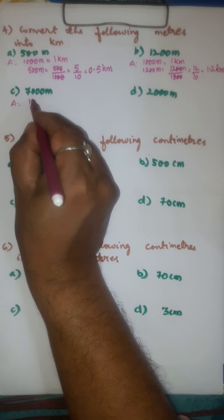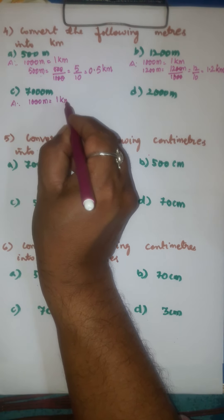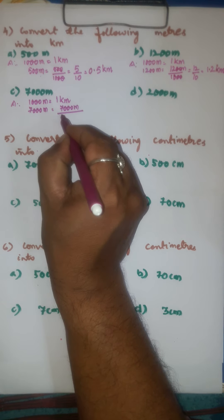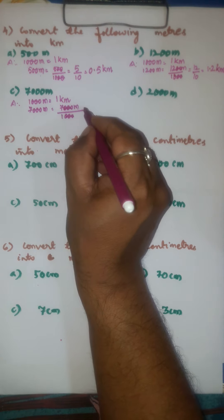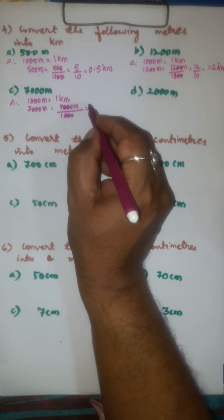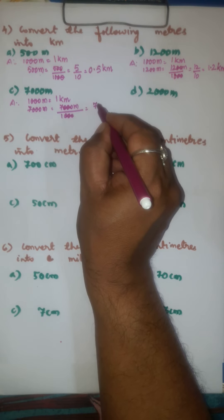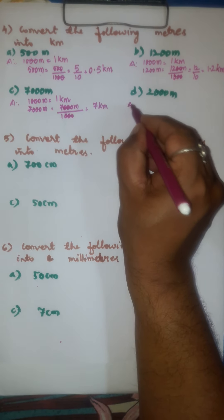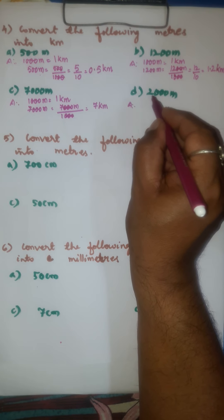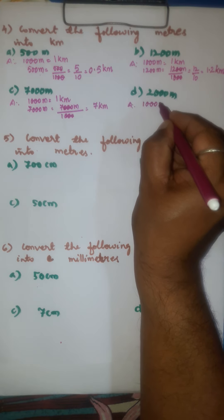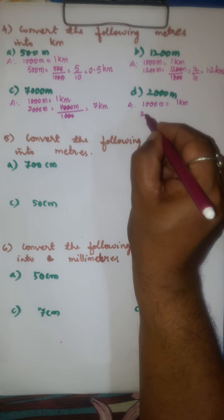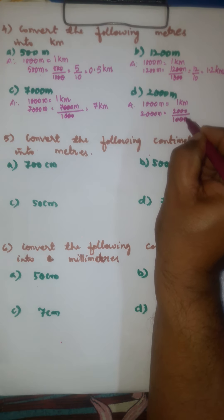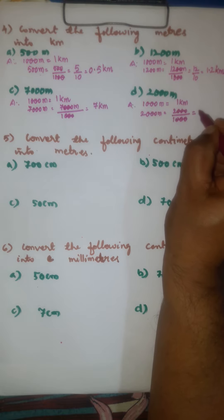Again, 1000 meters is equal to 1 kilometer. Therefore, 7000 meters divided by 1000 — all the zeros get cancelled — gives 7 kilometers. For the fourth one: 1000 meters is equal to 1 kilometer. Therefore, 2000 meters divided by 1000 — after cancellation — 2 divided by 1 is 2. So the answer is 2 kilometers.